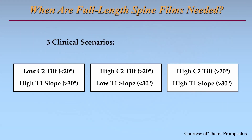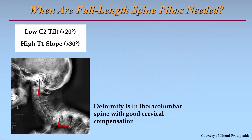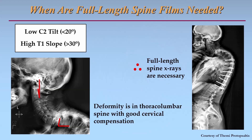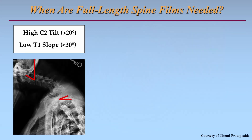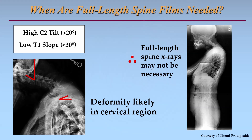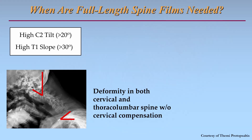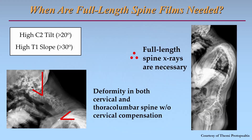We can look at three different clinical scenarios based on cervical x-rays. An individual can have a low C2 tilt but a high T1 slope — those individuals tend to have deformities in the thoracolumbar spine but with good cervical compensation. The next scenario is a high C2 tilt and a low T1 slope; in these individuals the deformity is likely in the cervical region, and full-length spine x-rays are less revealing. The third scenario is a high C2 tilt and a high T1 slope, where individuals may have deformities in both the cervical and thoracolumbar spine, making full-length x-rays especially important.